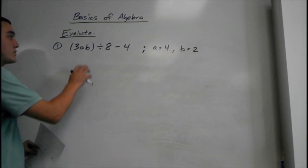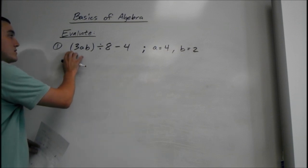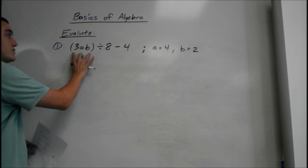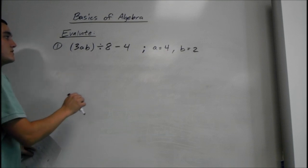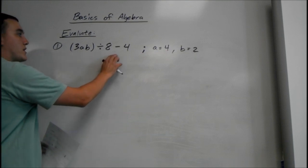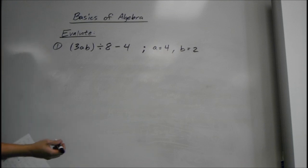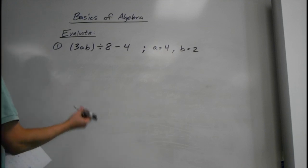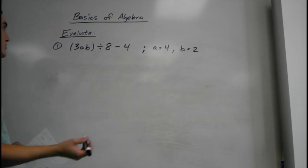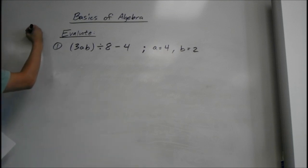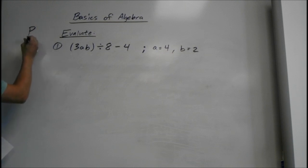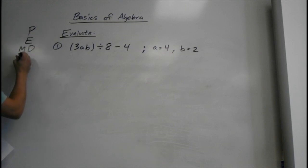So for the first one we have the quantity of 3ab — quantity means parentheses — divided by 8 minus 4. To do this we have to use please excuse my dear aunt Sally, or PEMDAS.